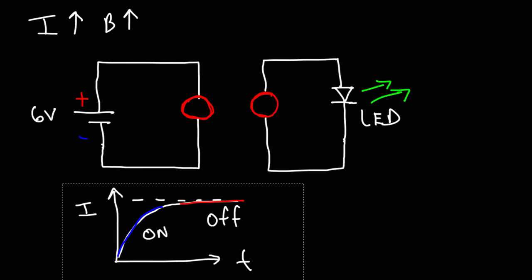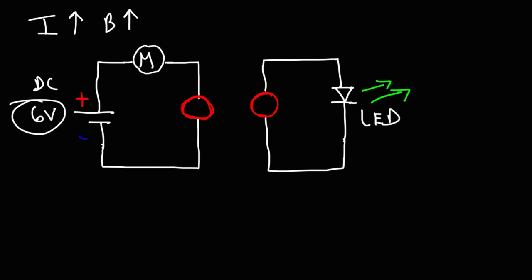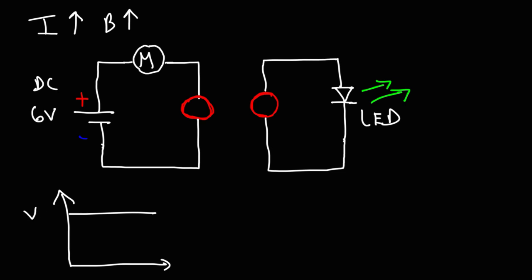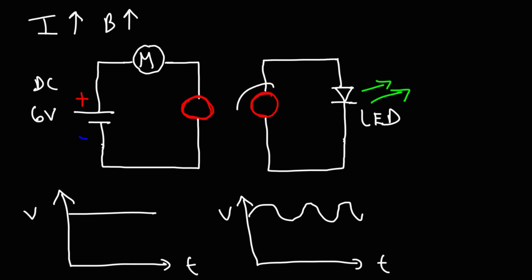Something interesting can happen: instead of using a DC circuit, if we put an AC source, because the current is constantly changing, the LED will stay on. Another thing you could do is use the 6-volt battery attached to a motor connected to the same coil. The motor will create a voltage-variant signal that rides on the 6-volt battery voltage. Without the motor, the voltage is relatively constant; with the motor, the voltage in the circuit will fluctuate. Because the voltage and current on the left are changing, the magnetic field is changing, producing a change in flux in the second coil that creates an induced current, turning the LED on.